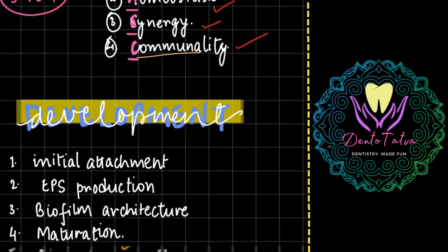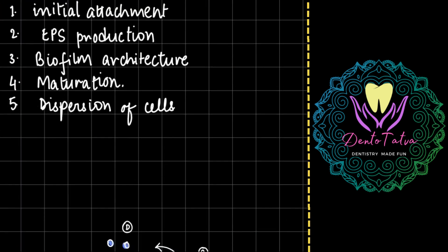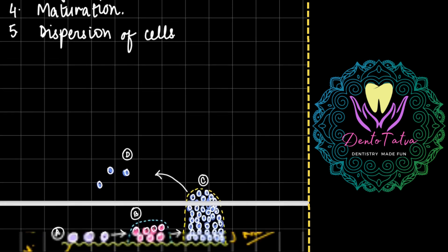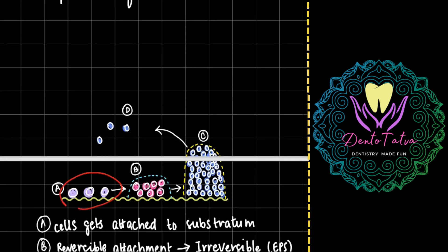Now how does this biofilm develop? There is going to be an initial attachment to the substratum. This is the initial attachment, followed by formation of the EPS matrix around the microcolony. This is going to mature and form a bigger colony known as a macrocolony, and then this colony at some point of time is going to do the dispersion of cells.